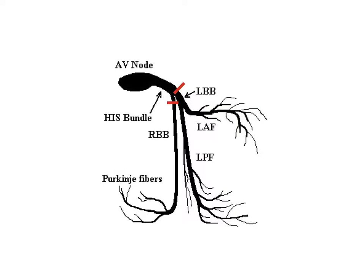Here is a visual representation of the bundle of His with the left and right bundles. This is a really good image to keep in mind when thinking about how the left and right bundle branches function. If you're able to visualize this picture, you can pretty much come up with the EKG findings on your own. Always keep this picture in mind when talking about right and left bundle branch blocks.